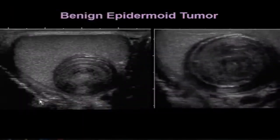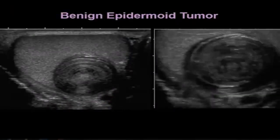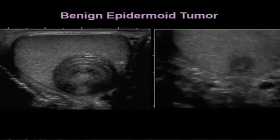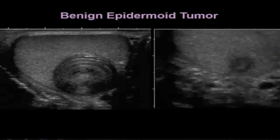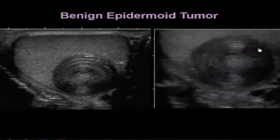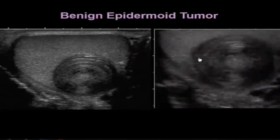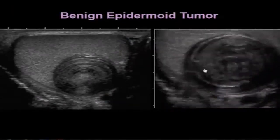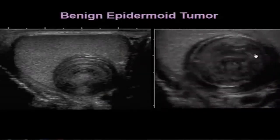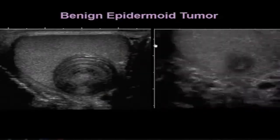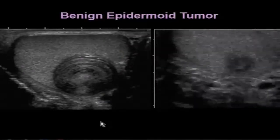An epidermoid tumor may sometimes have a characteristic appearance allowing us to diagnose it as benign. You can see the typical swirling or onion-skin pattern of this tumor — a well-defined lesion inside the testicle. This swirling pattern is typical for a benign epidermoid tumor.